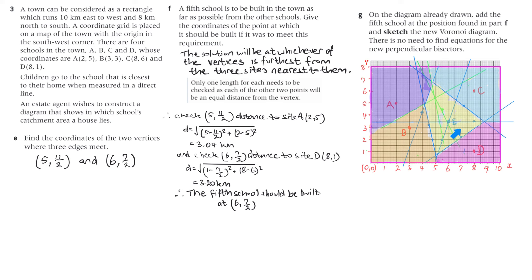Now I've recoloured the diagram to place the fifth school E at (6, 7/2). By putting it there, we've split up the regions between D and E — everything above that line is in E's region. I've added more perpendicular bisectors: the one for B and E, the one for A and E, and B and A remains. That's the new Voronoi diagram.